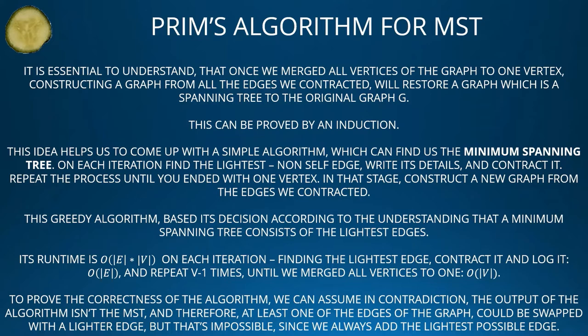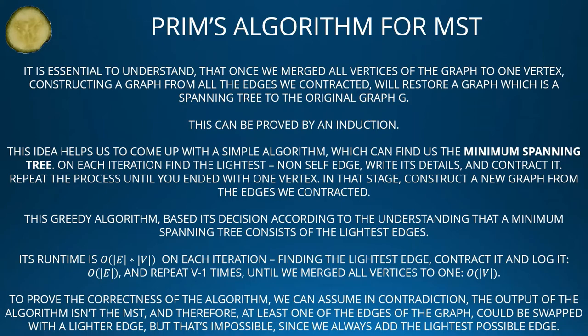To prove the correctness of the algorithm, we can assume, by contradiction, that the output of the algorithm isn't the MST. Therefore, at least one of the edges of the graph could be swapped with a lighter edge — but that's impossible since we always add the lightest possible edge. We are now ready to talk about Prim's algorithm.